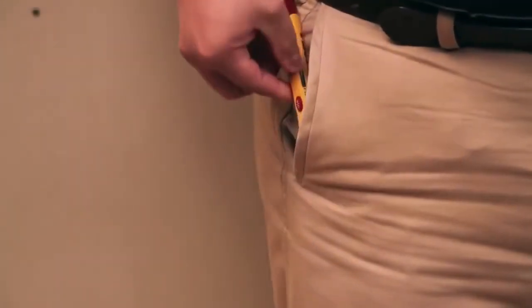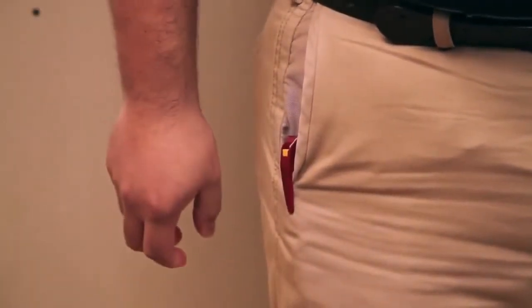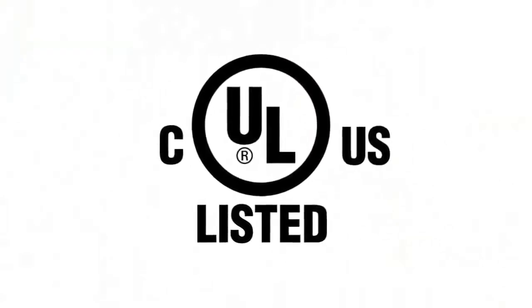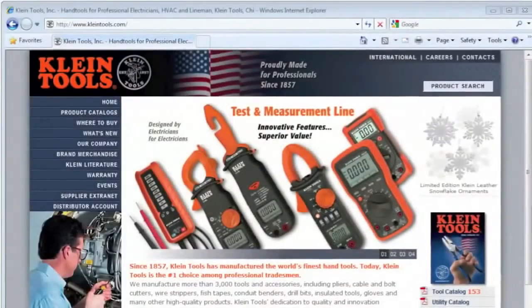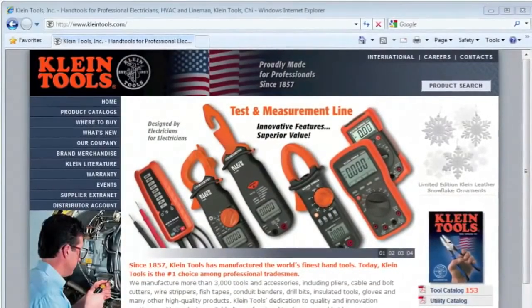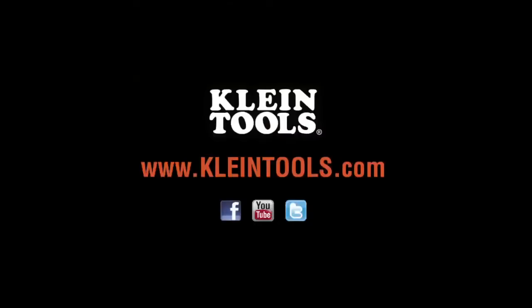The handy belt clip lets you keep the tester close at hand. The NCBT2 is UL-listed and CAT4 1,000-volt safety rated. Visit KleinTools.com to learn more about the NCBT2 Dual-Range Non-Contact Voltage Tester and Klein's full line of test and measurement instruments.